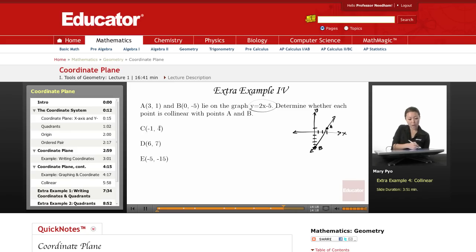So for point C, instead of graphing the line and seeing if that point lies on the line, you can just, since you know that this is x and this is your y, you can just plug it into the equation and see if it works. So y equals 2x minus 5. You're just going to plug in negative 1 for x and 4 for y.